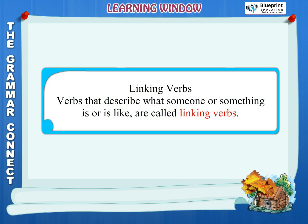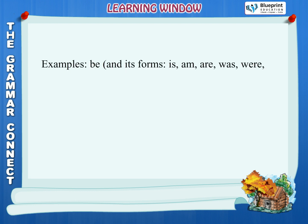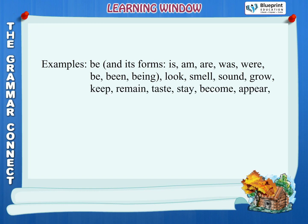Linking verbs: Verbs that describe what someone or something is, or is like, are called linking verbs. Examples — be and its forms: is, am, are, was, were, be, been, being. Other linking verbs include: look, smell, sound, grow, keep, remain, taste, stay, become, appear, feel, estimate, judge.